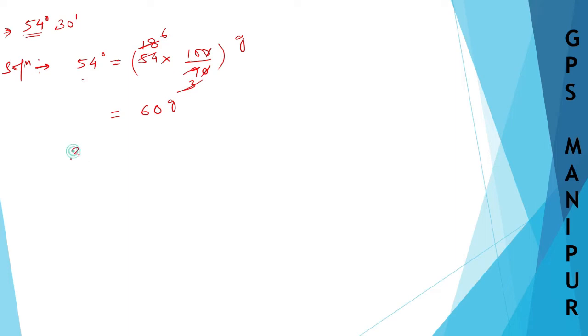Now let us convert 30 minutes. 30 minutes, you divide by 60. This is degree already, this will be in the form of degree. 0 out, 3, 1 is 3, 3 is 6, so it is 1 by 2 degree. Now 1 by 2 degree, you can convert it into grade.